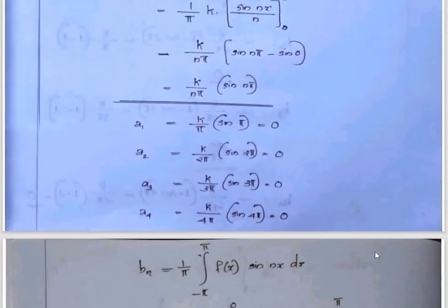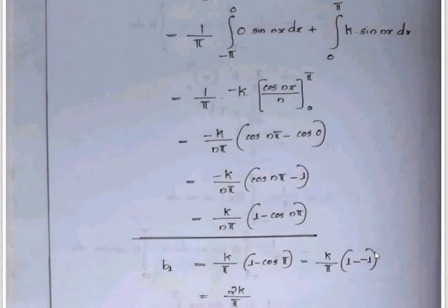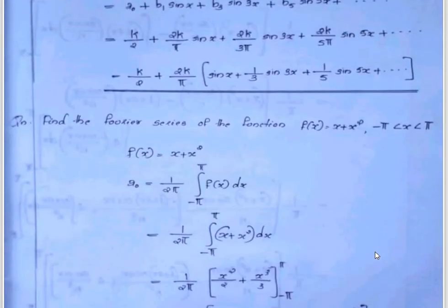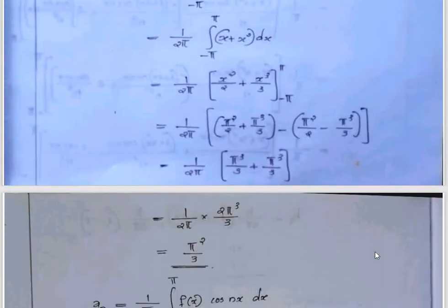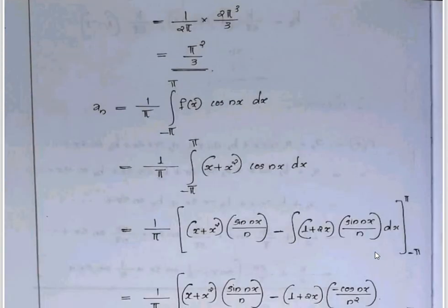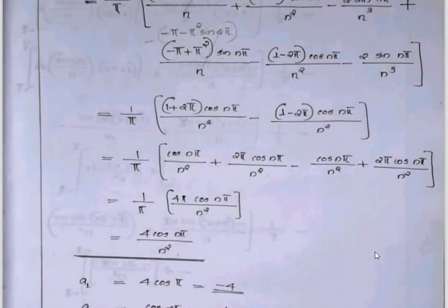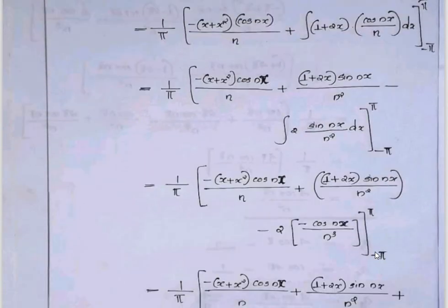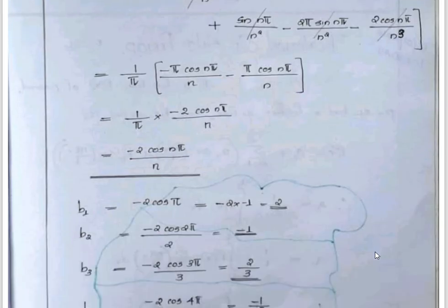For f of x equals 1 plus x plus x squared on minus π to π, the interval is 2π. Compute a0 equals π squared over 3. The an coefficient involves 4 cos nπ over n squared, giving a1, a2, etc. For bn, we get minus 2 cos nπ over n, giving b1, b2, etc.